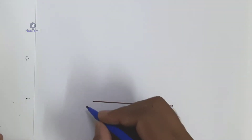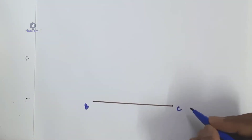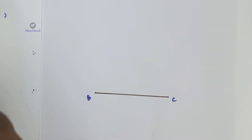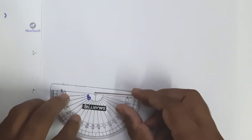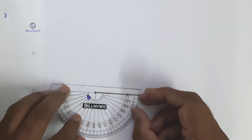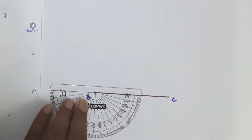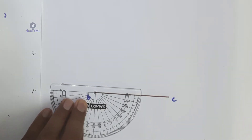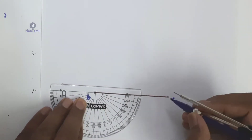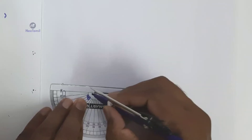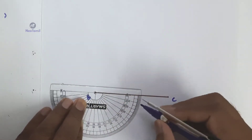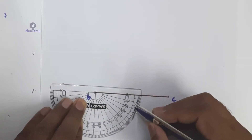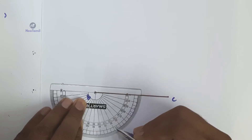So, I will take two vertices: one is B and another one is C. Then, through the protractor at B, draw a ray such that angle CBE is equal to 60 degrees — 0 degrees, 10 degrees, 20 degrees, 30 degrees, 40 degrees, 50 degrees, 60 degrees.